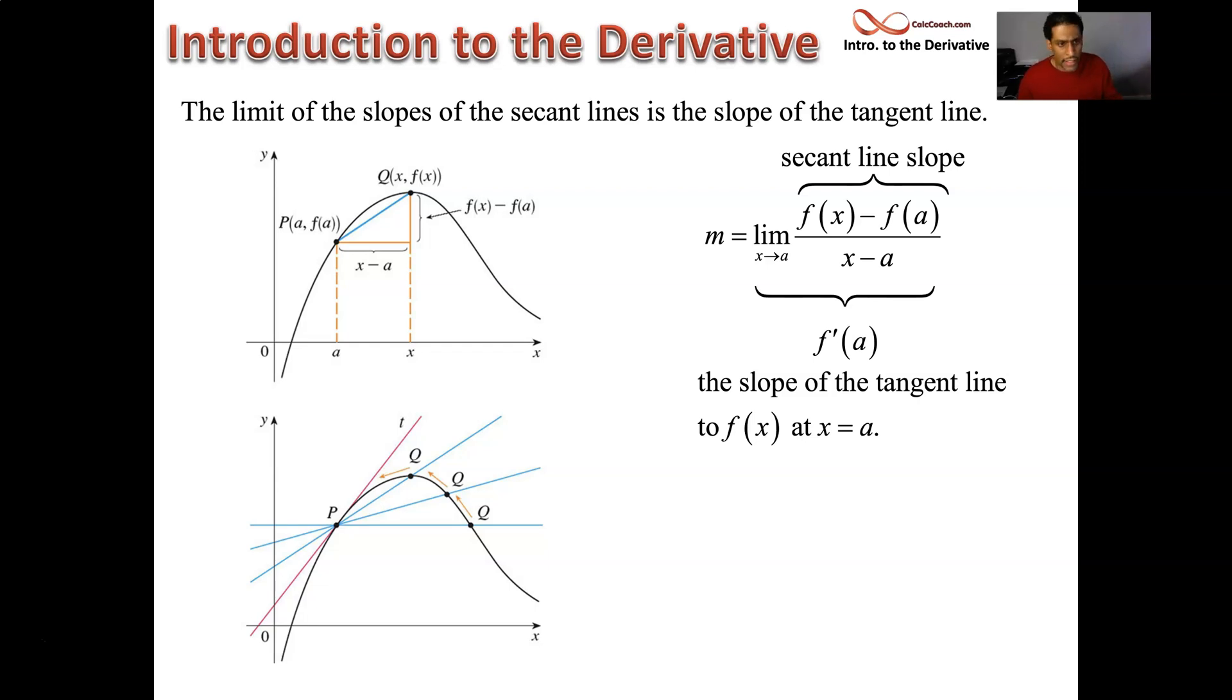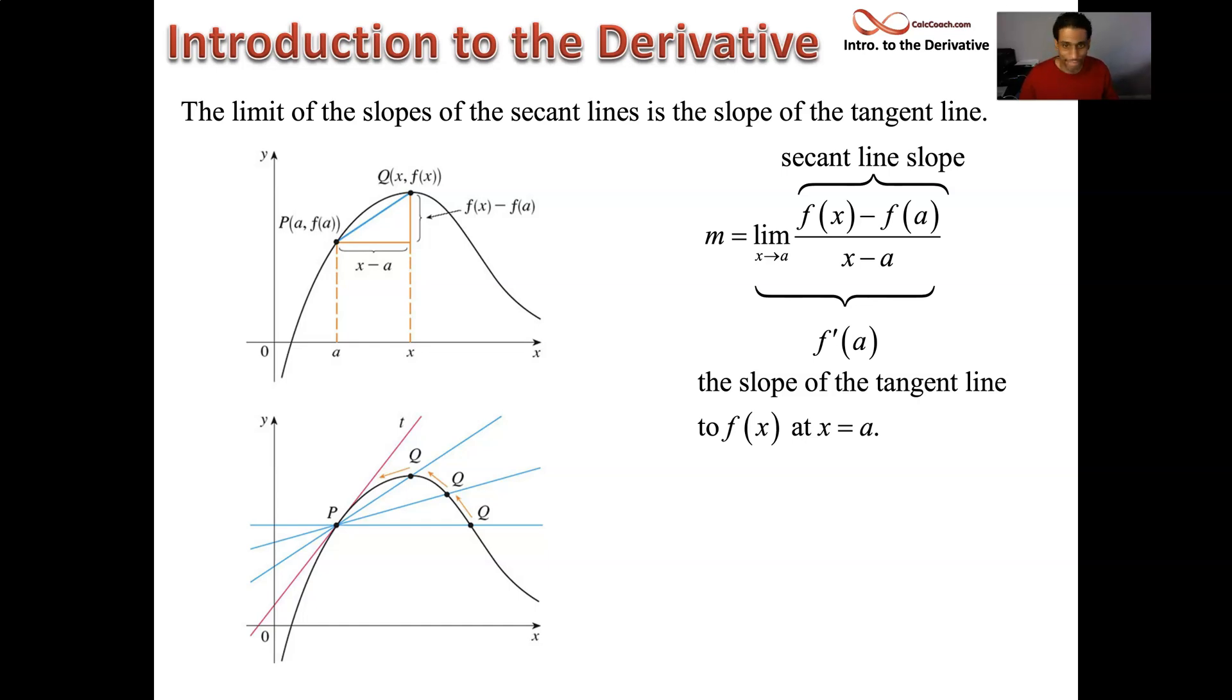So here we have this calculation for the derivative at a known x value, x equals a. Our function is going to be 2x³ - 5x. The point that we're interested in is when x is negative 1 and y is equal to 3. You plug a negative 1 in there, you should get a 3 out.